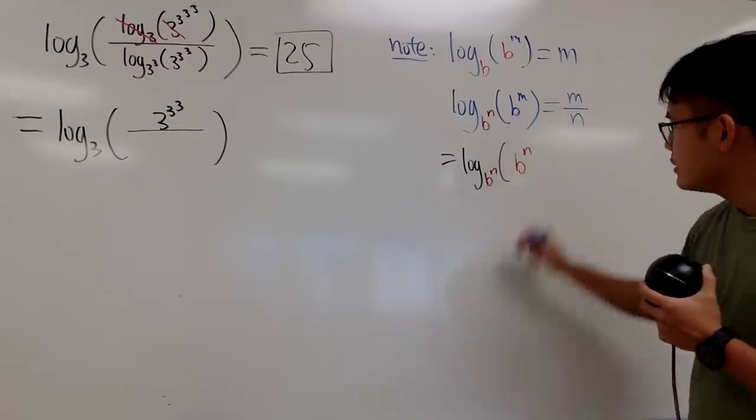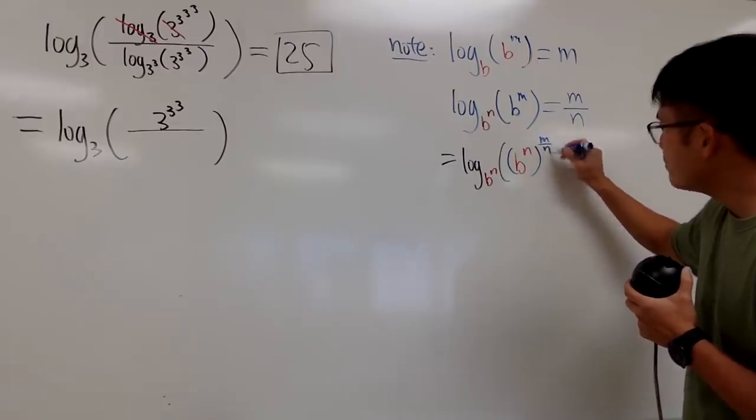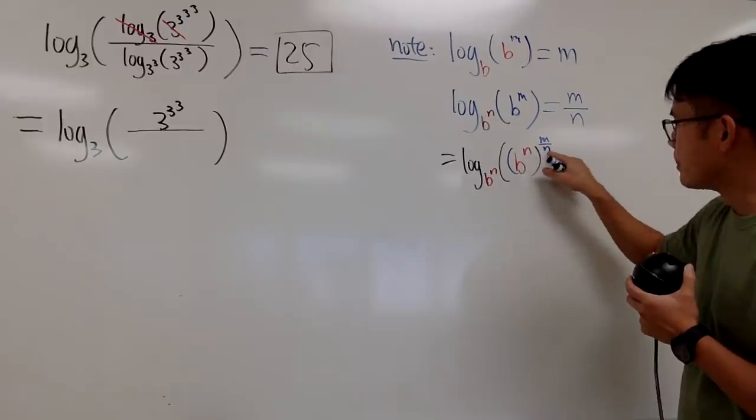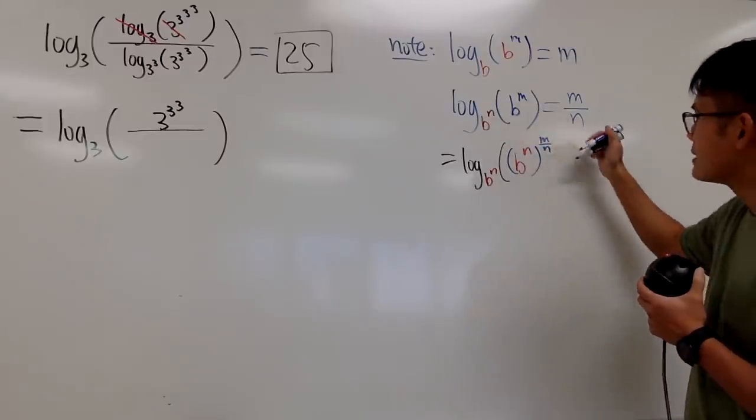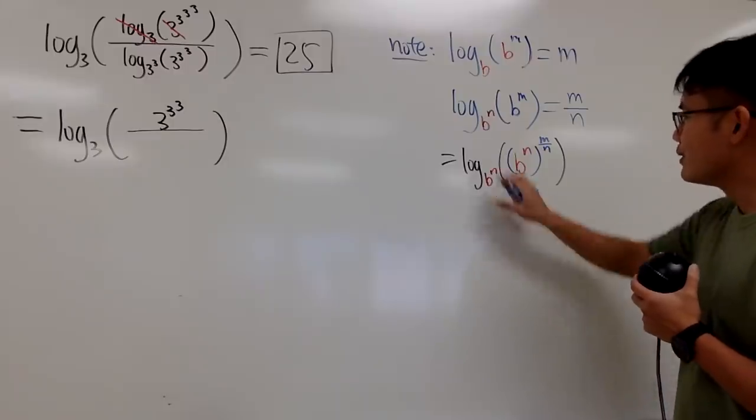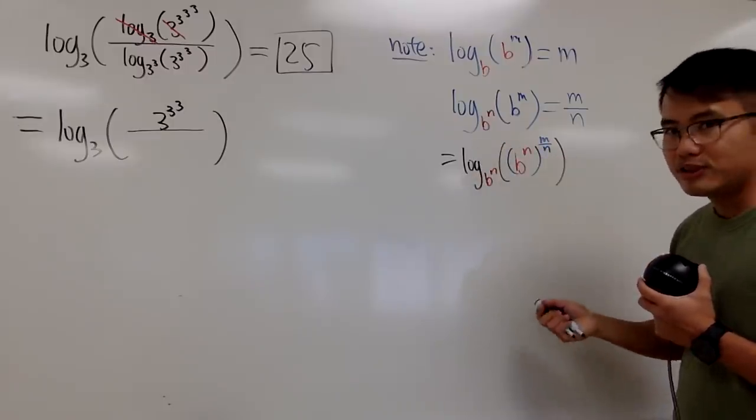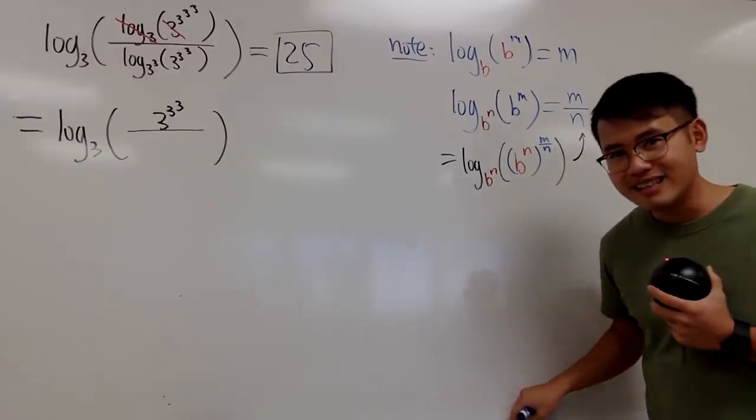Don't worry, I can just raise this to the m over n power, because when I multiply this with that, the powers, the n's will cancel each other out, right? So this is actually the same as that. So, you see this base, b to the n and b to the n, they actually match. So you can cancel them out. So of course, this is the same as m over n.